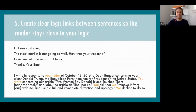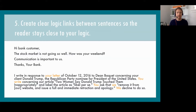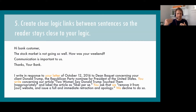Principle five: create clear logic links between sentences so that the reader stays close to your logic and the ideas you're trying to create. Imagine I get this email from a bank: 'I bank customer. The stock market is not going so well. How was your weekend? Communication is important to us. Thanks. Your bank.' As a reader, I'm trying to figure out how these three sentences connect. How does 'how was your weekend?' connect to the stock market report? There's nothing linking them. This is an example of not having logic links — links between sentences that fuse and build meaning so our reader marches along with us in the text.